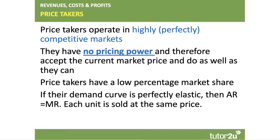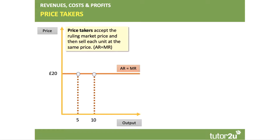Price takers have a very low percentage market share, which means they have very limited power in the market. Typically you associate this with perfect competition, where every supplier is essentially selling the same or homogeneous product or commodity. If a firm is a price taker, their demand curve will be perfectly elastic — they're selling perfect substitutes to other suppliers.